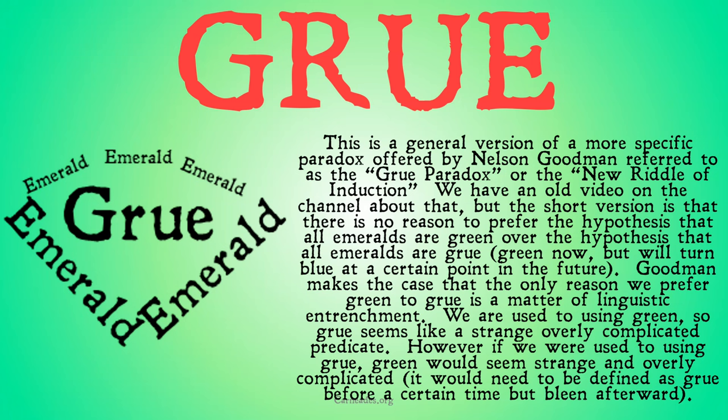The point here is that the language that we choose has impacts on how simple we think something is. And so, if the language we choose is arbitrary, then the simplicity of something — or particularly the elegance of a theory — is completely arbitrary. So we can't use elegance as a way to determine which theories are true, because it's going to be different based on the language.